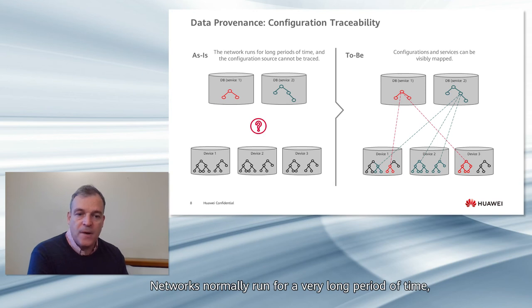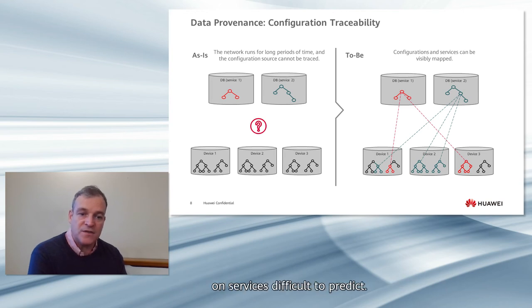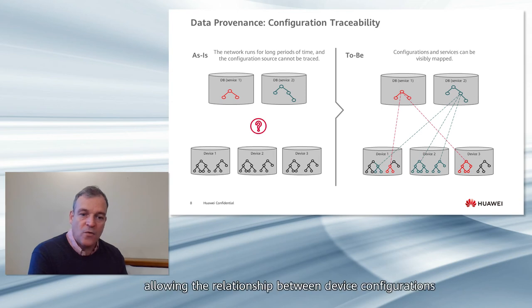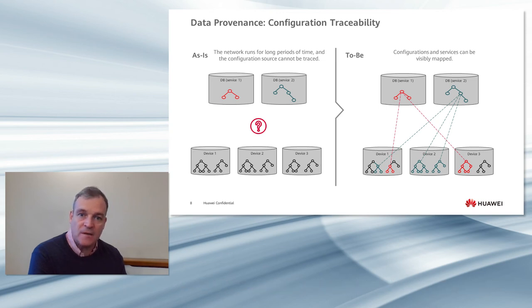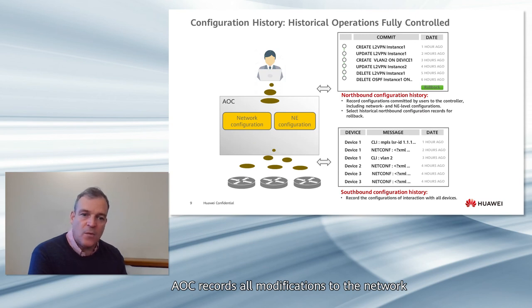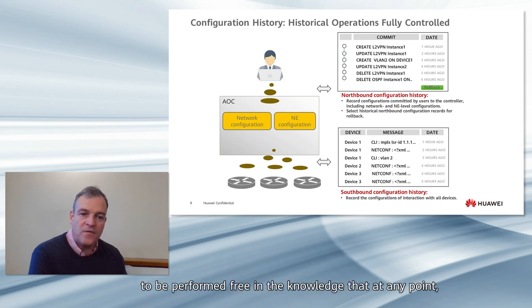Networks normally run for a very long period of time. Device configurations are complex and traceability between device configuration and services cannot be easily traced, with the impact of configuration deletion or device migration on services difficult to predict. AOC records all modifications to the network in a list of historical transactions, allowing operators to revert the network to any point in history. This capability allows any incremental change to the network to be performed with the confidence that configuration can be quickly restored to any previous point in history.